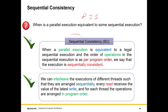So let us create a first memory model called sequential consistency or SC. This is fairly old and was pretty much the first widely accepted memory model to be proposed in the late 70s by Leslie Lamport. It is the most intuitive yet the most impractical. When a parallel execution is equivalent to a legal sequential execution and the order of operations in the sequential execution is as per program order, we say that the execution is sequentially consistent.